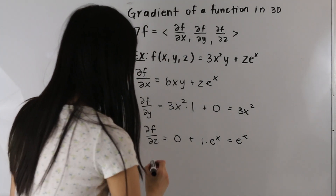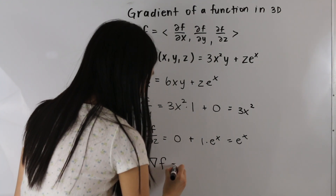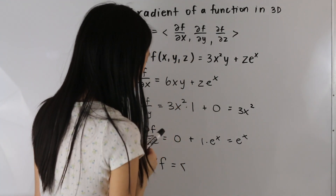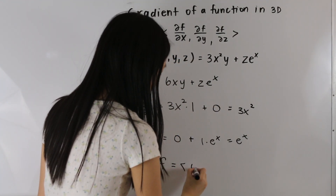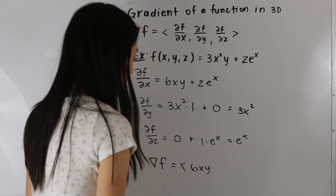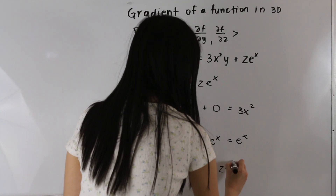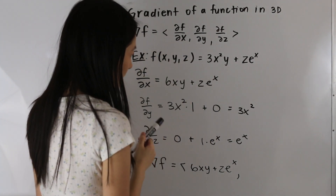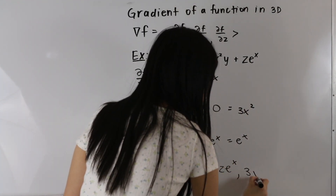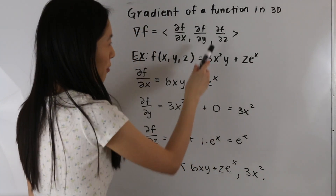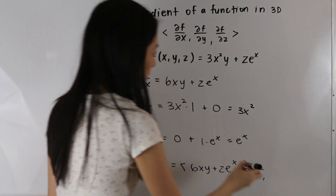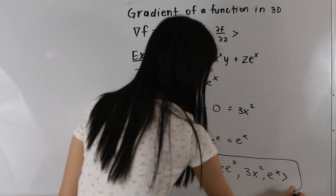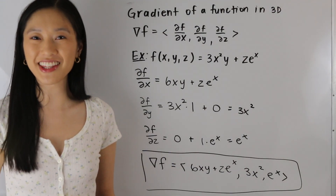So now we can put together our gradient vector. The gradient of f is equal to the partial derivative with respect to x, which is 6xy plus z e to the x, then the partial derivative with respect to y, which is 3x squared, and finally the partial derivative with respect to z, which is e to the x. And that is our final answer — that is how you find the gradient of a function in three dimensions.